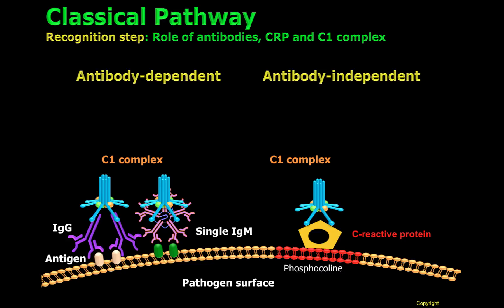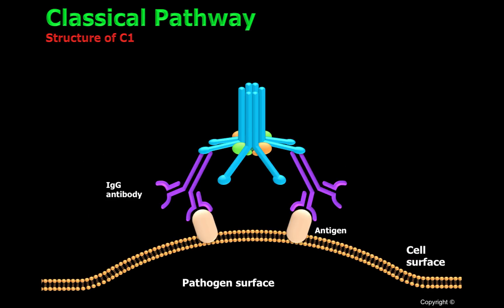As you can see here, one of the most important take-home messages is that the C1 complex is required and is unique to the classical pathway. Without C1, the classical pathway cannot take place. C1 is an important protein that is unique to the classical pathway of the complement system. C1 is formed by three proteins: C1-Q, C1-R, and C1-S.